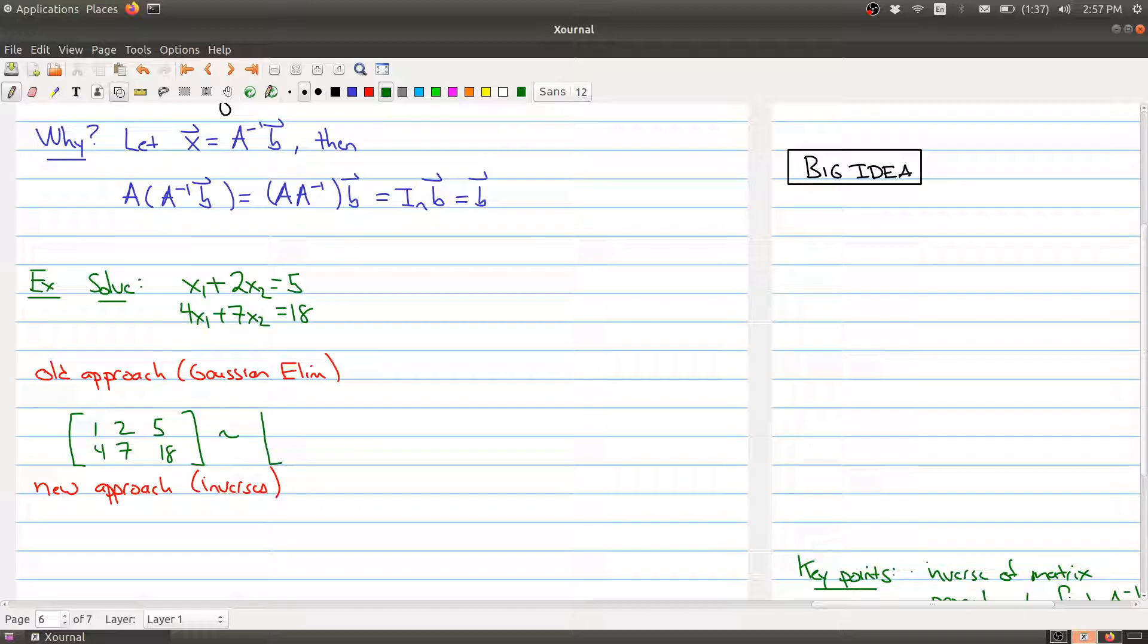And I'm going to row reduce this and I'm going to skip the steps. But again, you can pause if you want and try to fill in the details. I put it into row reduced echelon form. And this tells me that x1 is 1 and x2 is 2. Let's make this clear that this is the echelon form. Put some dotted lines there. Okay, so this is the old approach.